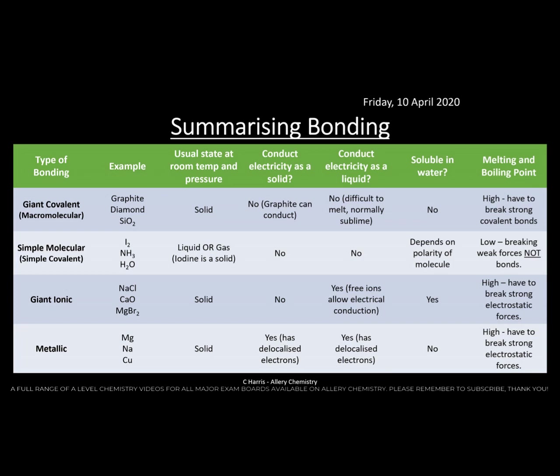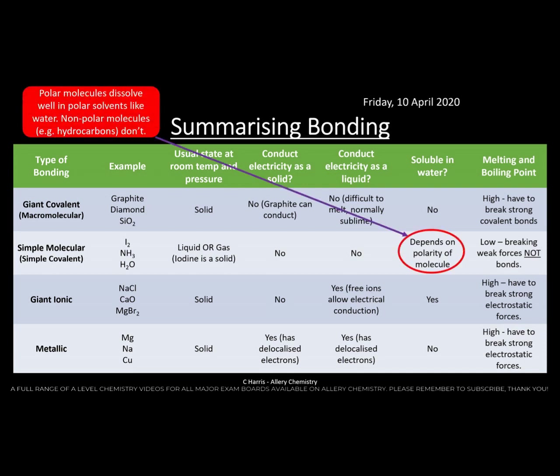To summarize bonding: we have giant covalent bonds, simple molecular bonds (covalent bonds not in a giant structure — things like water, ammonia, iodine), giant ionic bonds, and metallic bonds. Simple molecular substances like water, iodine, and ammonia sometimes are soluble and sometimes aren't depending on what you dissolve them in — don't worry too much about that.